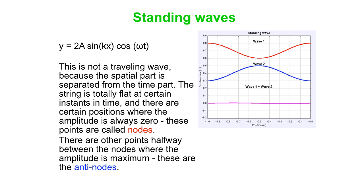Then we've got points halfway between them where the maximum is, or the amplitude is maximum. Those are what are known as antinodes. Nodes: no displacement. Antinodes: lots of displacement. Not all the time, but more at those points than other points.